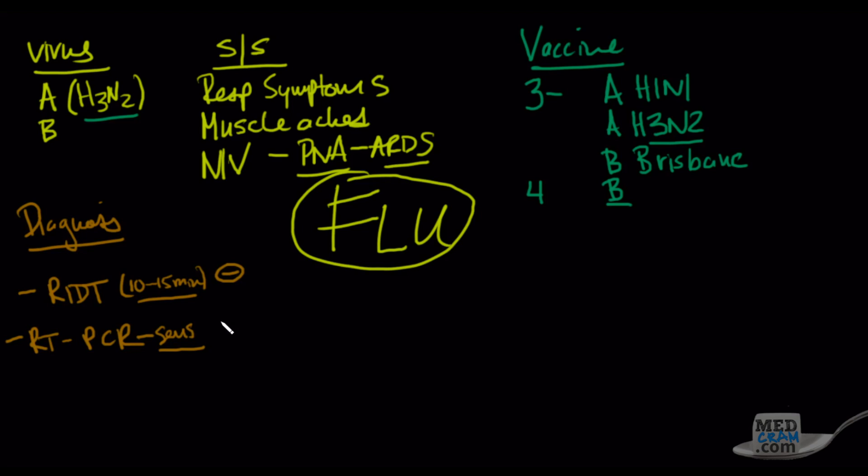The RT-PCR is extremely sensitive, so if it's negative, that one you can rule out. Remember spin and snout: SP means specific, if something is very specific you can rule it in. And snout, sensitive, if it is something that's very sensitive, then you can rule it out. The RIDT is not very sensitive, so you cannot rule things out with a negative RIDT.